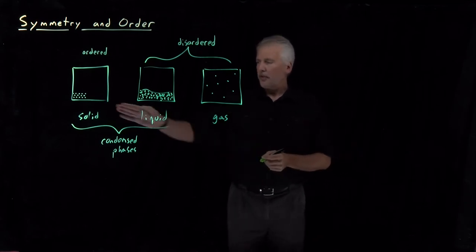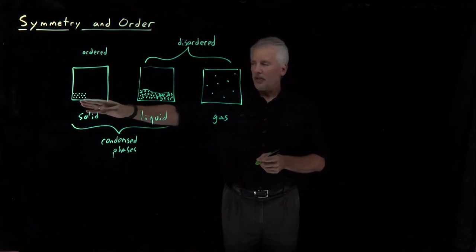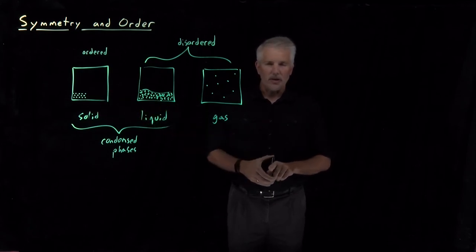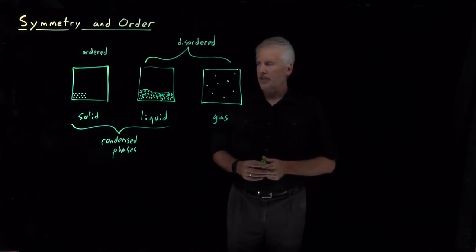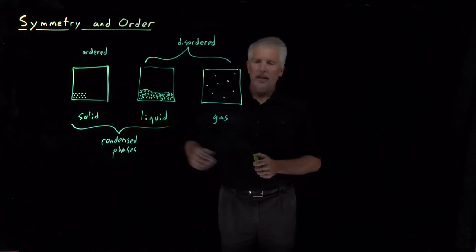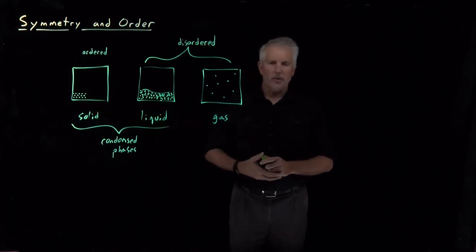So it's easy for you to recognize what I mean when I say the solid is ordered and the liquid is disordered. But what exactly does that mean? If I press you for a definition, you might come up with some terms. You might say, well, there's some symmetry in the solid that's not present in the liquid.